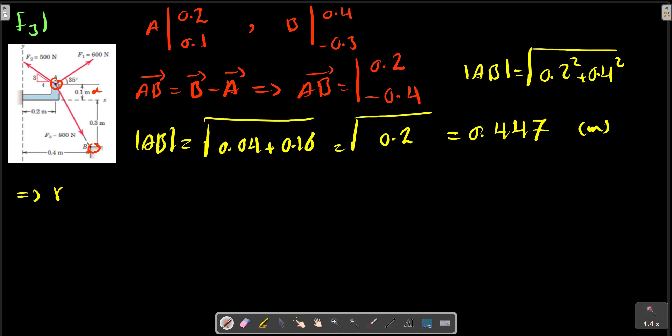And the magnitude of AB. So we can calculate AB. So the unit vector for this direction is AB, and the magnitude of AB, 0.2i plus 0.4j, and it equals to...